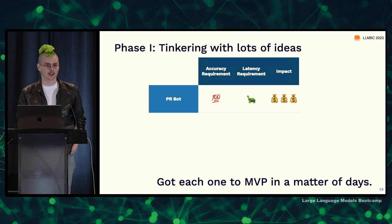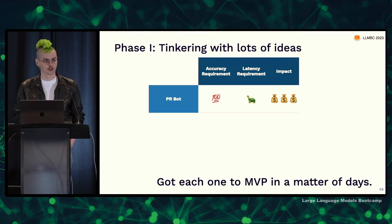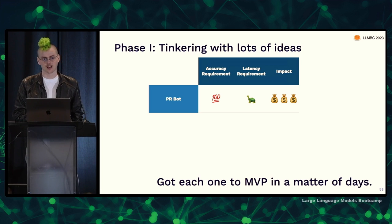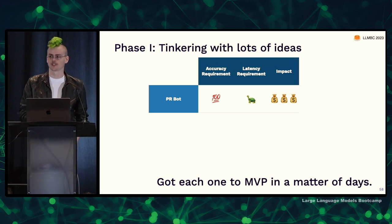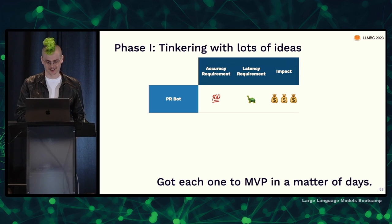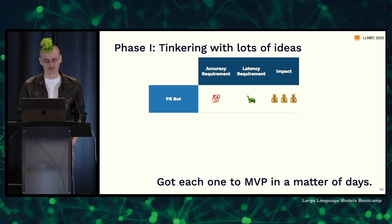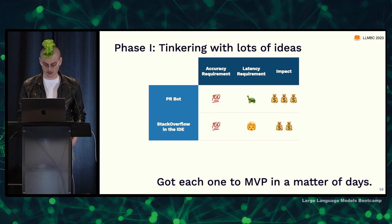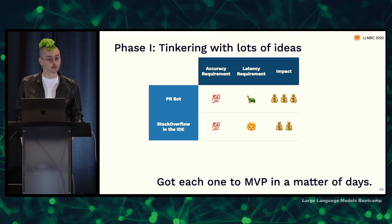The PR bot didn't have a high latency requirement — the latency for an issue being posted to a PR being posted is maybe 48 hours even in a fast-moving shop, so you can take your time. The impact could be huge — you're automating software engineering. They also considered something like Stack Overflow inside your editor, taking advantage of VS Code as an interface to answer questions about code. That also has a high accuracy requirement — you're putting effort in asking a question and expect a return. Latency requirements are roughly at the scale of seconds, not milliseconds or days.